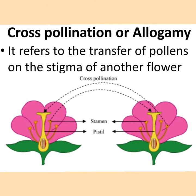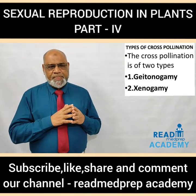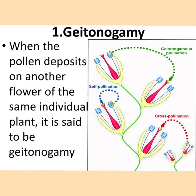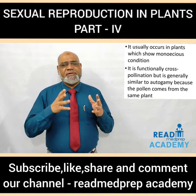What is cross-pollination or allogamy? It refers to the transfer of pollens to the stigma of another flower. In the image you can see that the transfer occurs from one flower to another of a different plant. Cross-pollination is of two types: geitonogamy and xenogamy. When the pollen deposits on another flower of the same individual plant, it is said to be geitonogamy. It usually occurs in plants which show monoecious condition. It is functionally cross-pollination but is generally similar to autogamy because the pollen comes from the same plant.